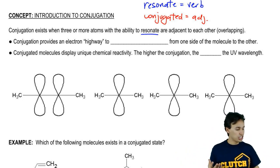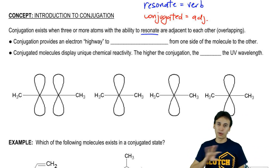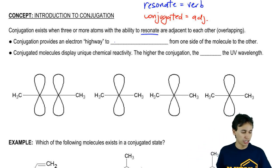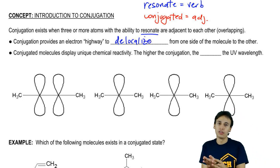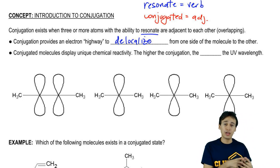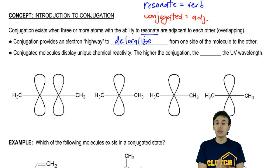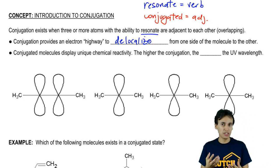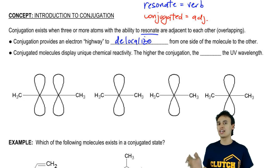What does this mean? Well, conjugation provides a highway or an electron highway for electrons to delocalize from one side of a molecule to another. We all know that delocalization provides stability for molecules. That's something that we learned a long time ago about resonance.